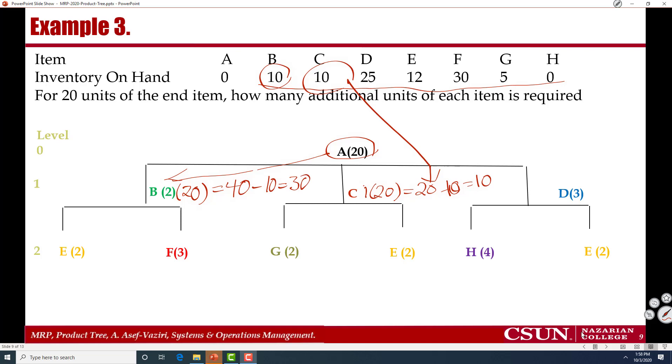For each unit of A, we need 3D. And therefore for 20, I need 60D. But I do have 25D. Therefore, 60 minus 25, that will be 35. So I need 35 here, D.